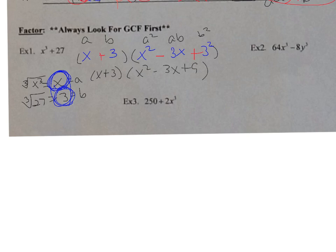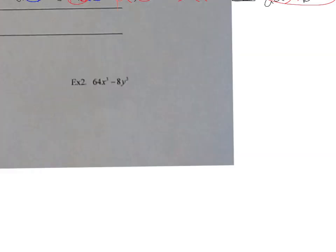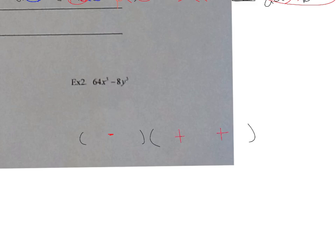Now example 2: the difference of perfect cubes 64x³−8y³. Set up two parentheses. Using SOAP: first sign is the same (minus), next is opposite (plus), last is always positive. Cube root of 64x³: cube root of 64 is 4 and cube root of x³ is x, giving 4x. Cube root of 8y³ is 2y.